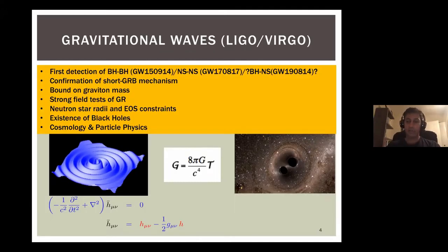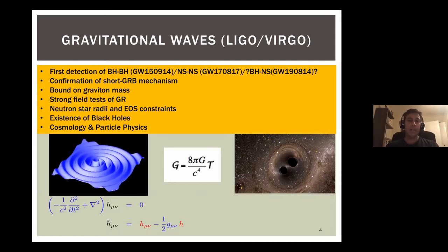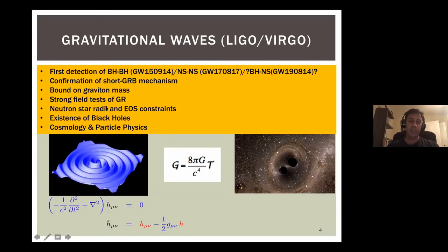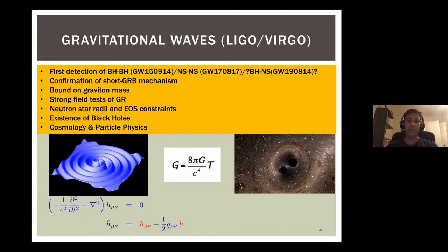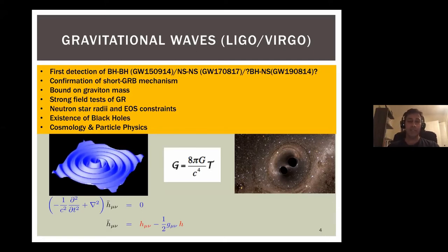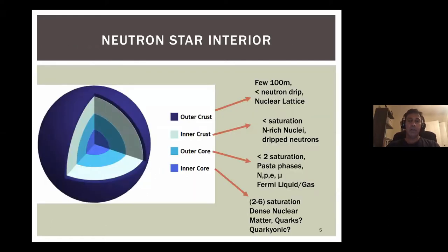Gravitational waves have given us a lot of information: neutron star radii and equation-of-state constraints from tidal polarizability extracted from the waveform, nicer is also helping with that, and there are implications for cosmology and particle physics. So gravitational waves have really delivered on their promise and more.